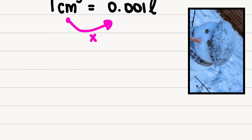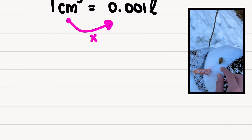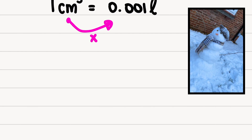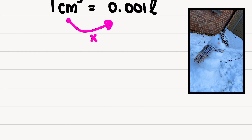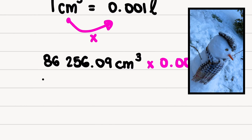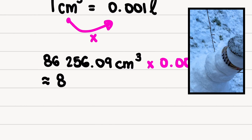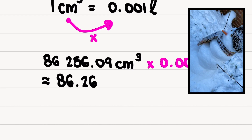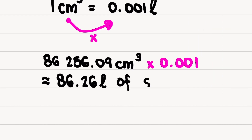So I multiply 86,256.09 by 0.001, which gives me an approximation of 86.26 litres of snow. So it takes approximately 86 litres of snow to create a four-level snowman that measures 86 centimetres high.